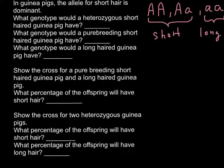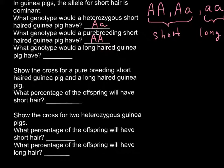So once again, what genotype would a heterozygous short-haired guinea pig have? Heterozygous means one allele is dominant and the other is recessive, so the genotype would be capital A, small a. Another question: what genotype would a pure breeding short-haired guinea pig have? Pure breeding means both alleles are the same kind, so that is capital A, capital A — homozygous dominant for the short trait.